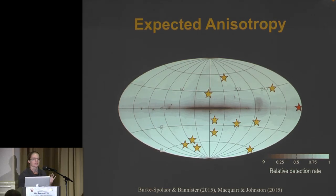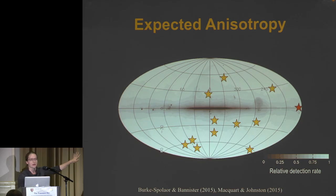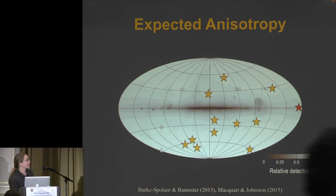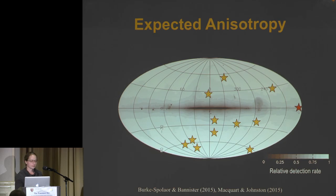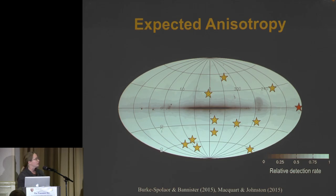This deficit in the plane is actually expected from an extragalactic population. For an instrument like the Parkes multibeam survey, you'd expect a drop in the galactic plane due to excessive scattering, excessive dispersion, higher sky temperature, and more instrumental broadening — all leading to less sensitivity there. The NE2001 model suggests we should have detected a little more in the galactic plane, and McCourt and Johnston suggest the extra contribution may be due to scintillation. In addition to the excessive dispersion seen, most people conclude fast radio bursts are extragalactic.